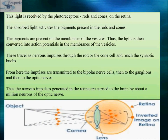Rods and cones are the photoreceptors. The light from the object is received by these photoreceptors — rods and cones — which are densely found in the retina. The absorbed light activates the pigment present in the rods and cones. The pigments are present on the membranes of the vesicles. Thus the light is converted into action potential in the membranes of the vesicles.